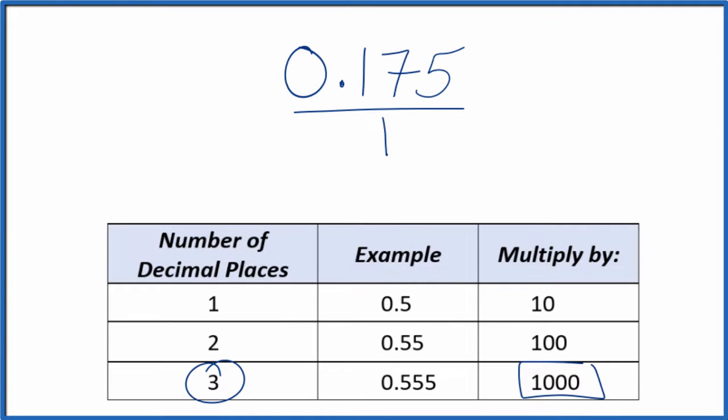So we multiply the numerator here by a thousand. Thousand times 0.175, that equals 175. That's our whole number.